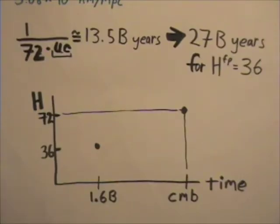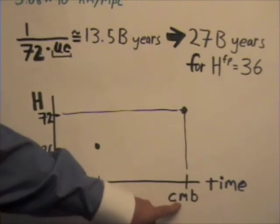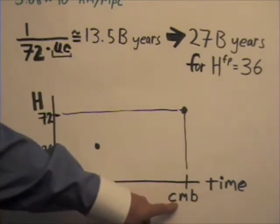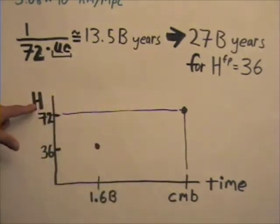But it's not that simple. Because as you recall, even calculated using the first principles formula, the Hubble constant for the cosmic microwave background radiation comes out to be 72.